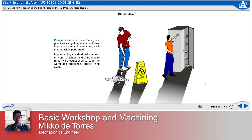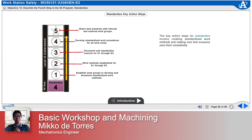Implementing standardized methods for sort, straighten, and shine require rules to be established to keep the workplace organized, orderly, and clean. The key action steps for Standardize involve creating standardized work methods and making sure that everyone uses them consistently.